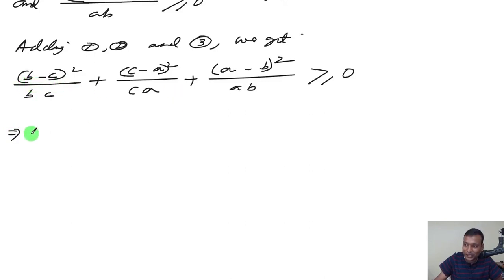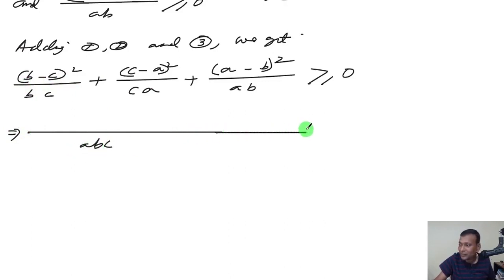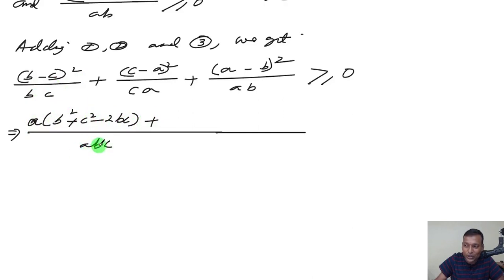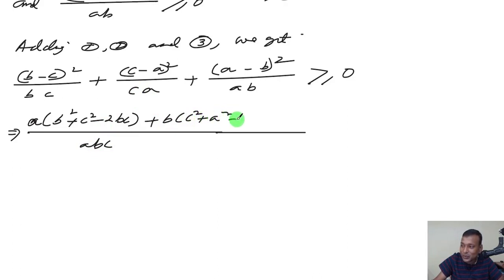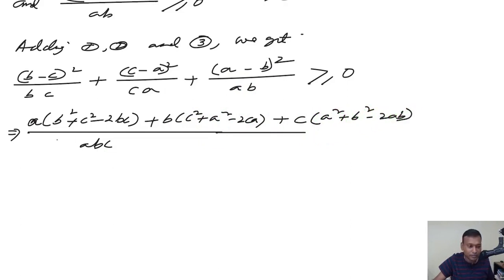Taking LCM as abc: multiplying out, we get a(b - c)² + b(c - a)² + c(a - b)² ≥ 0. Expanding: a(b² + c² - 2bc) + b(c² + a² - 2ca) + c(a² + b² - 2ab) ≥ 0.